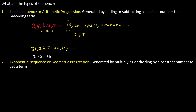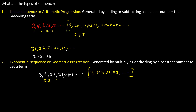For the second type, we have exponential sequence or geometric progression. This type is generated by multiplying or dividing by a constant number to get each term. For example, having the progression 3, 9, 27, 81, 243: if we study this, we see there is multiplication by 3. So 3×3 = 9, 9×3 = 27, 27×3 = 81, 81×3 = 243. This is an exponential sequence in which there is multiplication by 3.